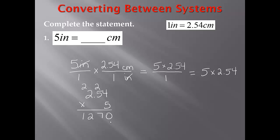Now I need to put the decimal in my answer. In my problem, I have a 5 and a 4 after my decimal, so that would be 2 places. In my answer, I need to move 2 places to the left for my decimal, giving me 12.70, or 12 and 70 hundredths centimeters. I could also write this as 12.7, or 12 and 7 tenths centimeters.